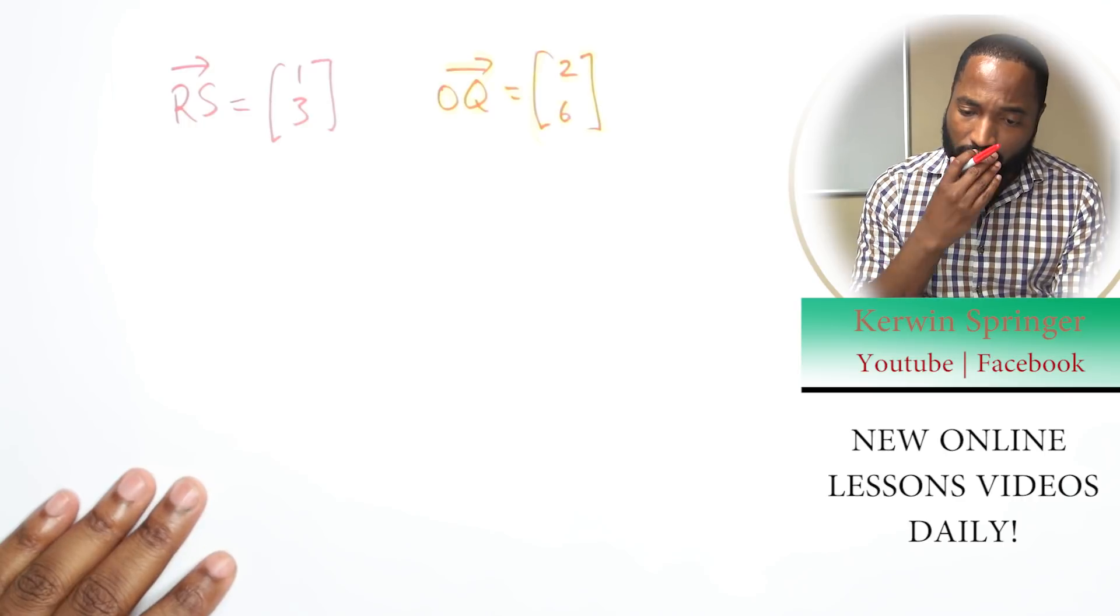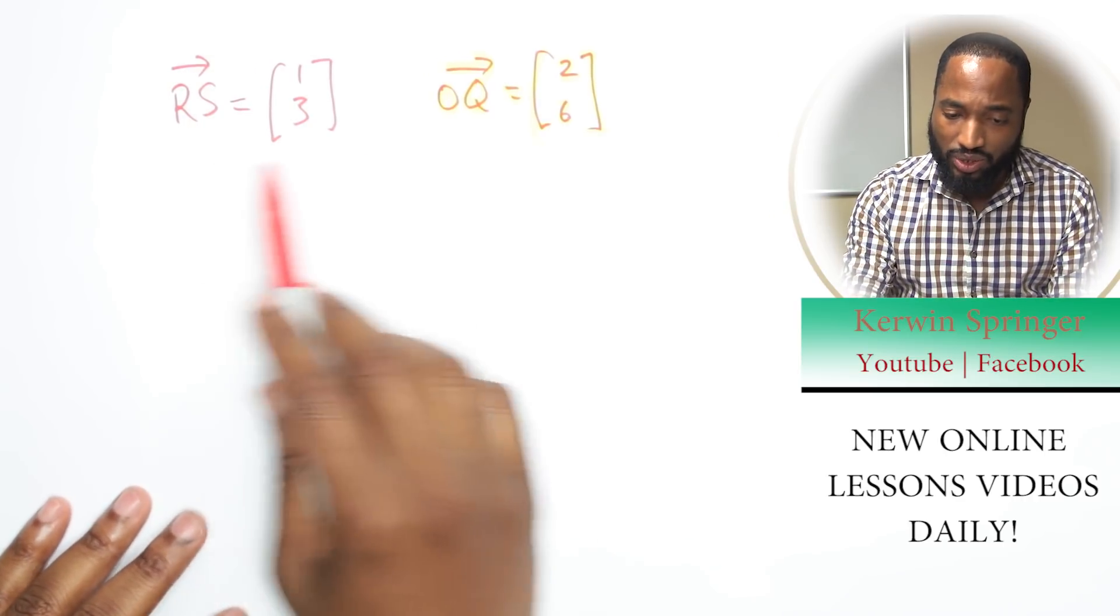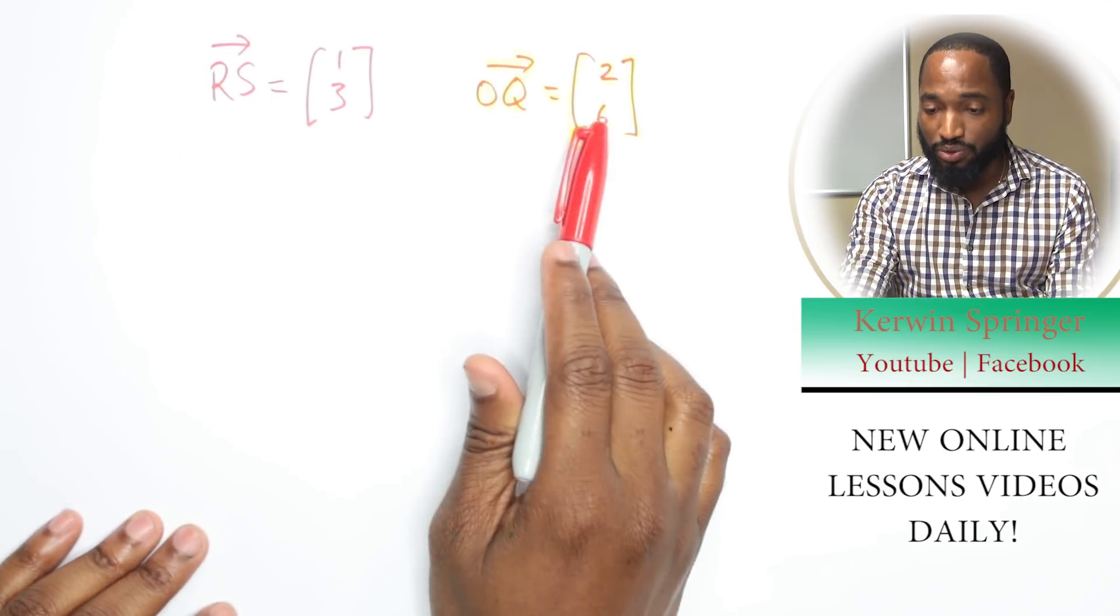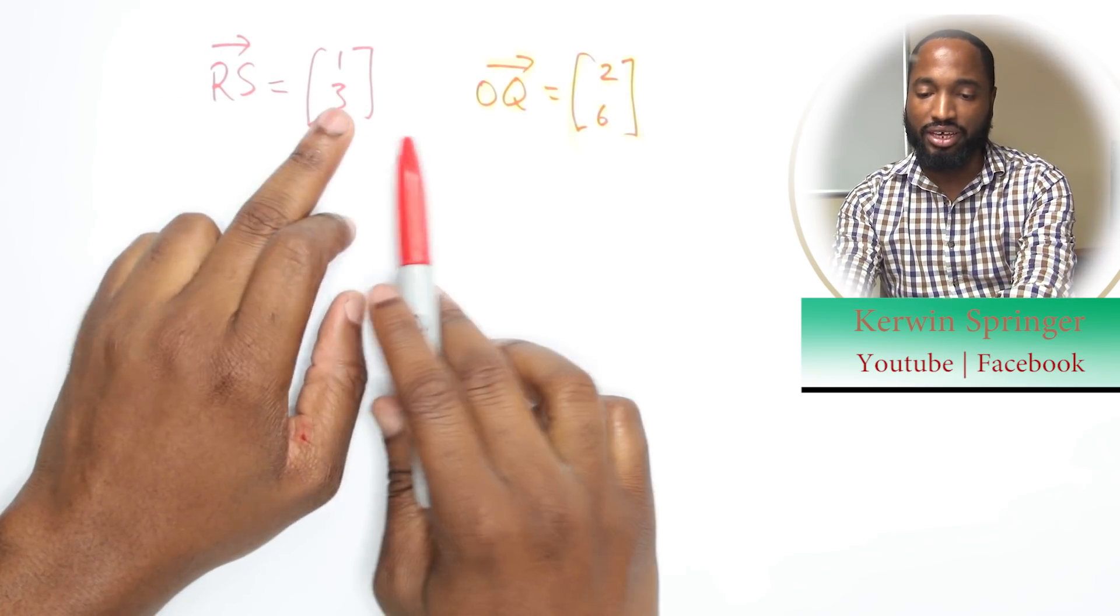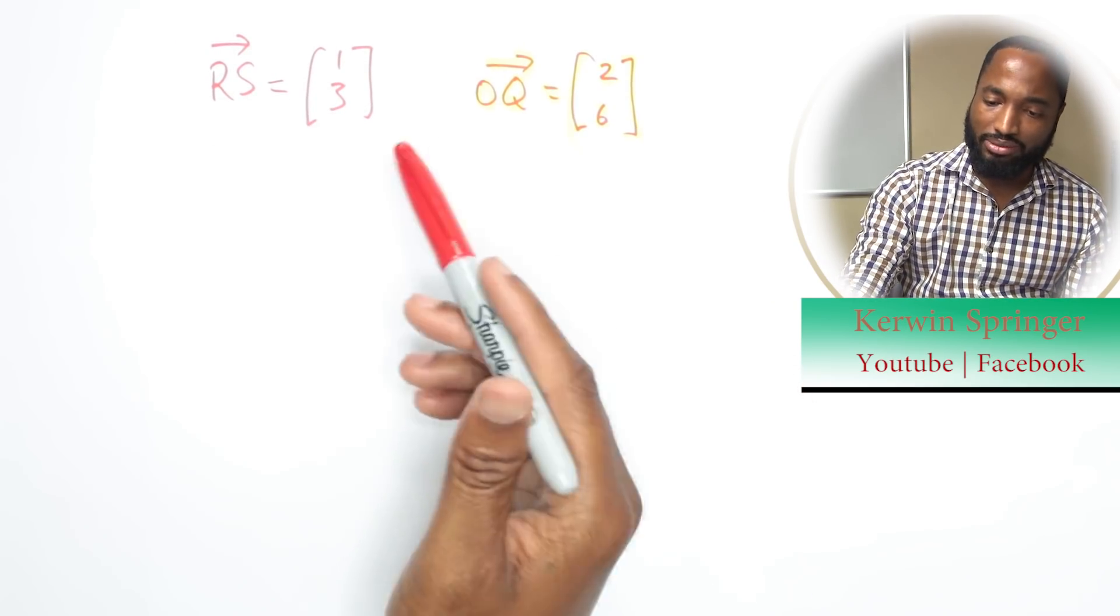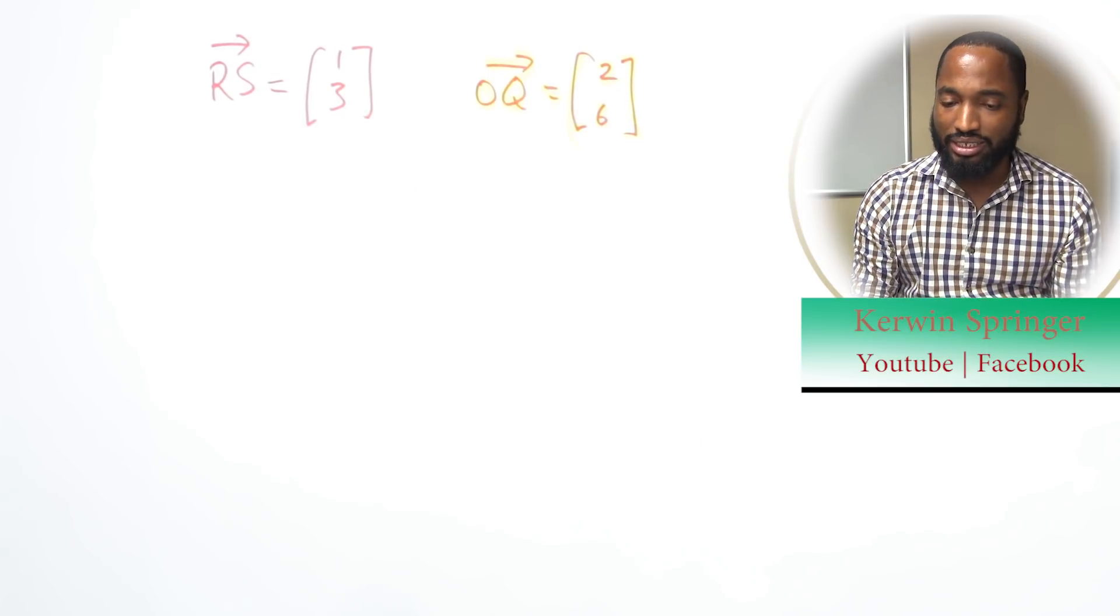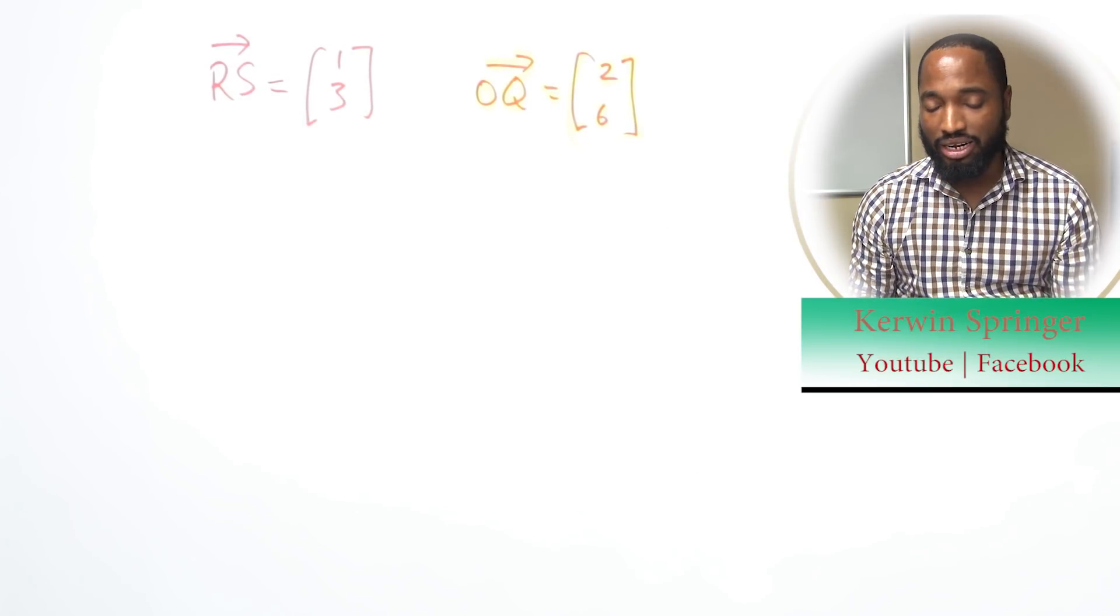In this question, we are asked to show that these two vectors are parallel. Now OQ, which we found, is parallel to RS. You could already see something going on there. Two times this is that, and so to show they're parallel you need to use some words.